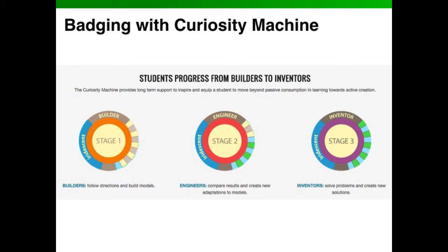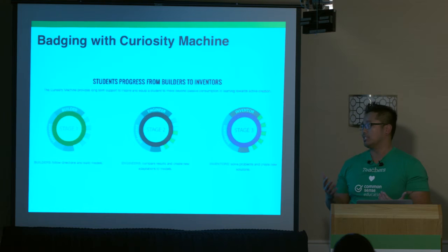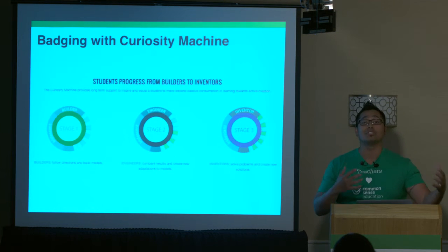Another use case is badging—affording ways for kids to build on their own skills. Students can start at stage one as a builder, then work toward becoming an engineer, and eventually an inventor as they progress through design challenges. The goal is that they can problem-solve and create new solutions. It's a great way to have kids build up that skill, especially if you are looking at leveraging badging in your classrooms.